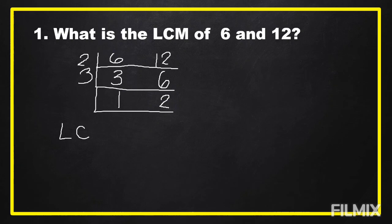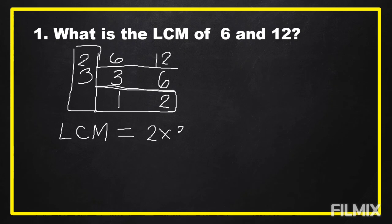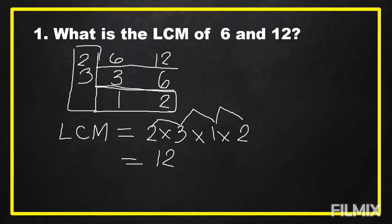We're going to multiply all the prime factors and the numbers below: 2 times 3 times 1 times 2. Two times 3 is 6, times 1 is 6, and 6 times 2 is 12. So the LCM of 6 and 12 is equal to 12.